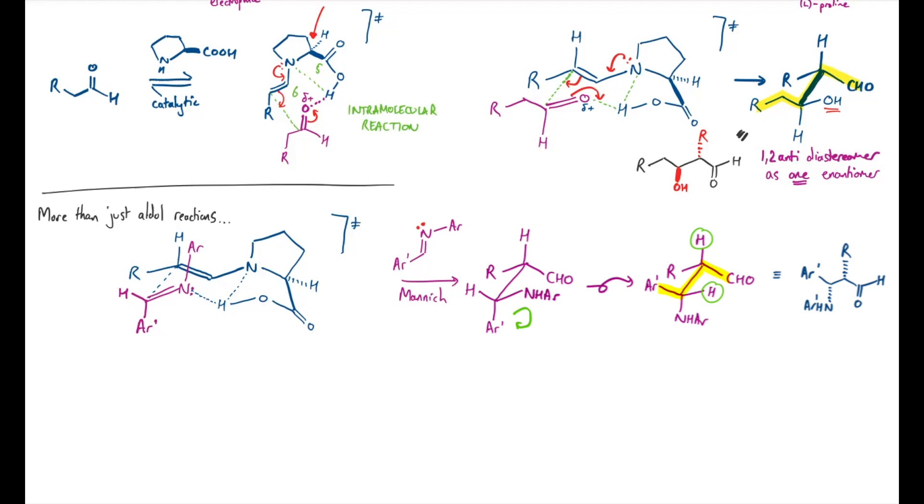while this time we've still got the R group at the back but the amine is also back. So this is our product from this reaction, it's actually the 1,2-syn diastereomer, to use the normal nomenclature, we also still form one enantiomer of this selectively.